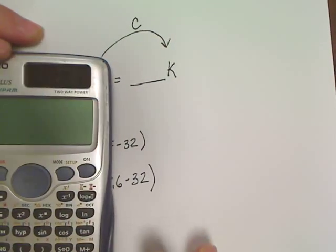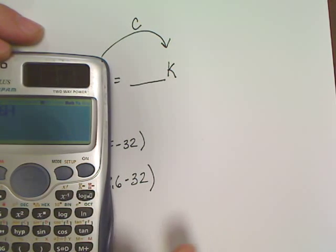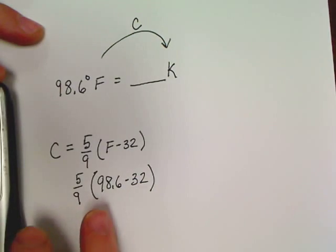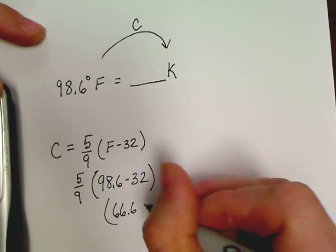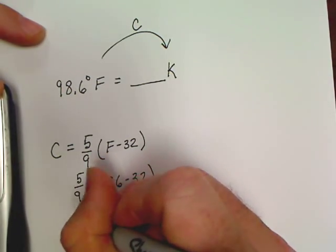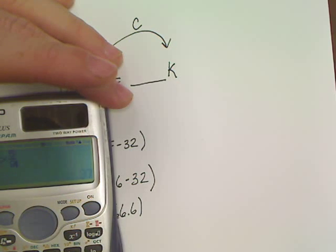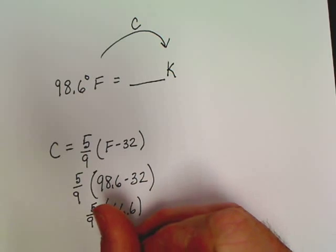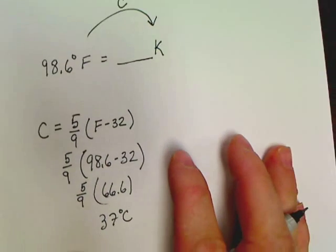In the case of this one, we've got 98.6 - 32, and that's 66.6 when you subtract, times 5/9. And yes, my calculator could have done it all at once, but I like to be a little old-fashioned. That's an even 37 degrees Celsius. Fascinating.